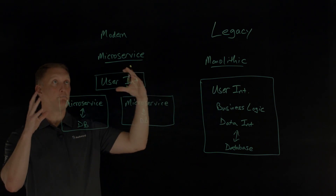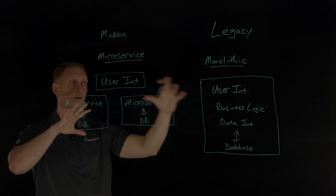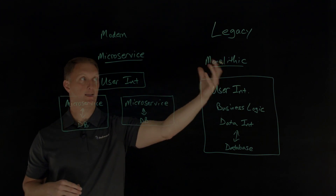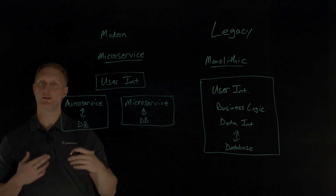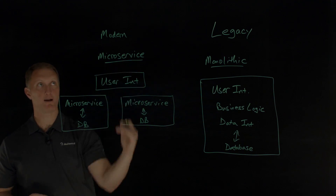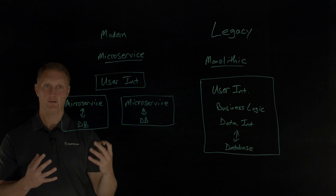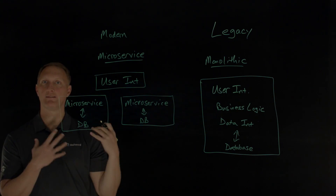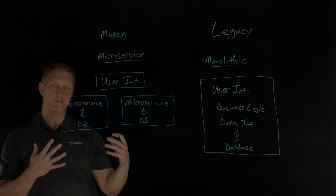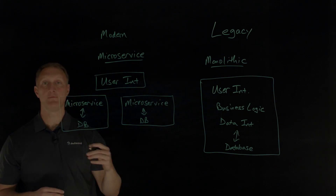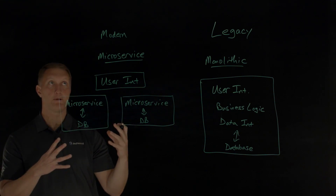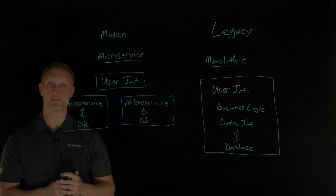When we talk about modern applications, they are built on these different architectures. But we want to get into: when does an application move from a legacy application to a modern application? There are different pillars of modern applications — if you want to call your application a modern application, it must contain certain pillars. In the next video, we'll talk about those pillars and the foundational elements of what makes up a modern application.